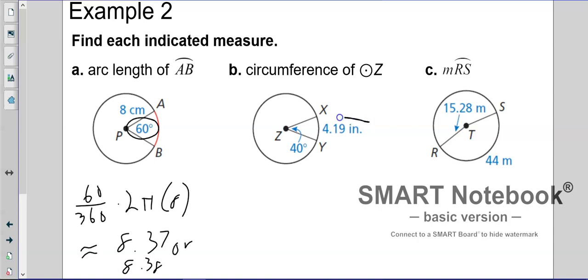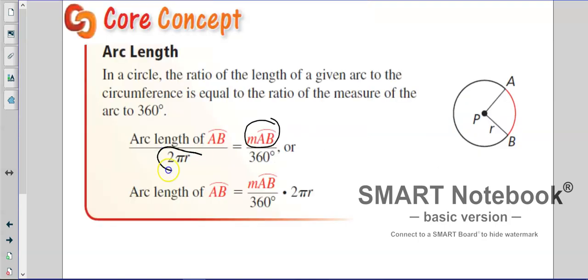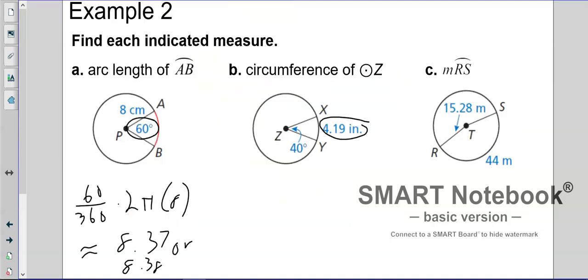Now, on this one, notice we do know the length, so we're working backwards. Now, if we look back at the previous formula, notice 2 pi r, that is a circumference. So the arc length divided by circumference is equal to the measure divided by 360. So what we're going to do is set it up like that. We're going to say 4.19, because we know the length, divided by the circumference, which we don't know, is equal to 40 divided by 360. Now, if we just cross multiply and solve, we get 40 C equals 360 times 4.19, that's 1508.4. Now, if we divide that by 40, we get 37.71.